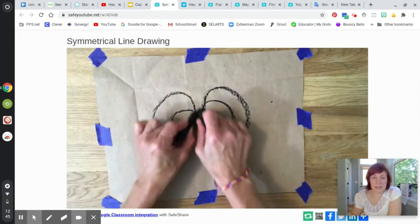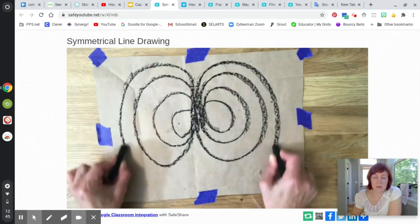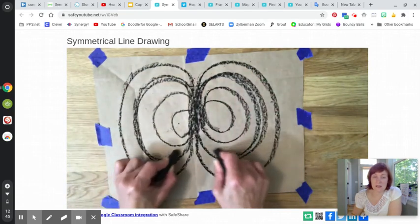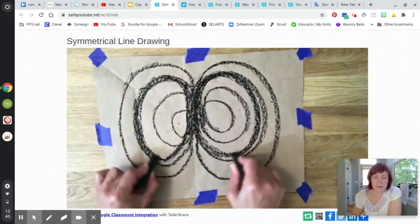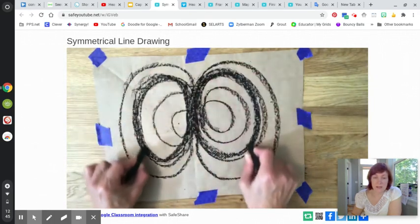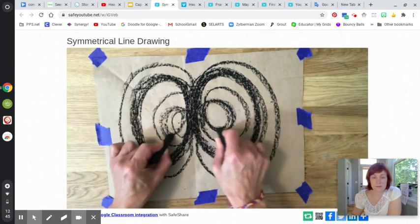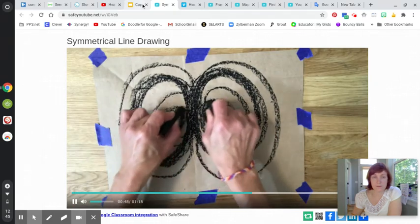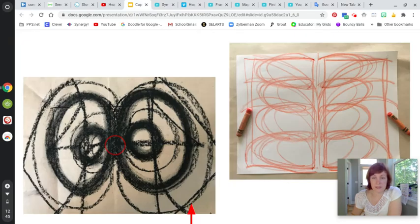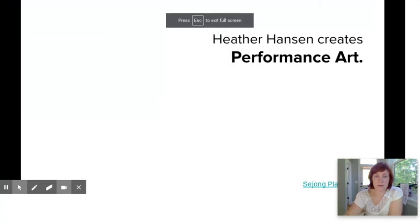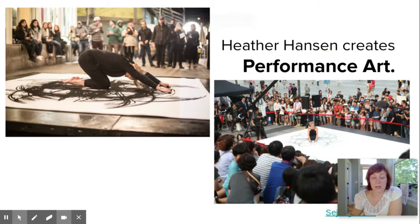So both hands at the same time, starting in the center and then sort of to catch this energy of Heather Hansen, sort of mindlessly, automatically doing the marks that your body wants to make. So I think you get the idea. You can do this with all kinds of different media and you can do this in different sizes.